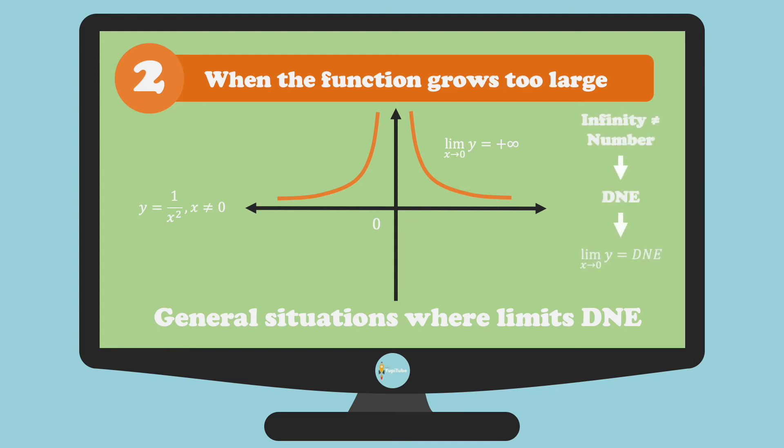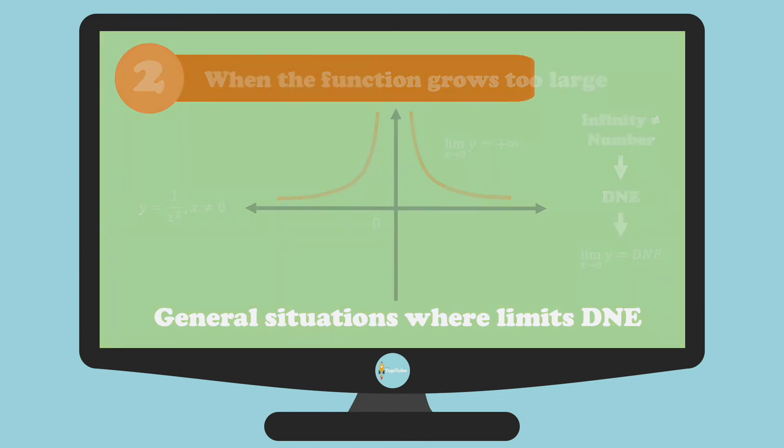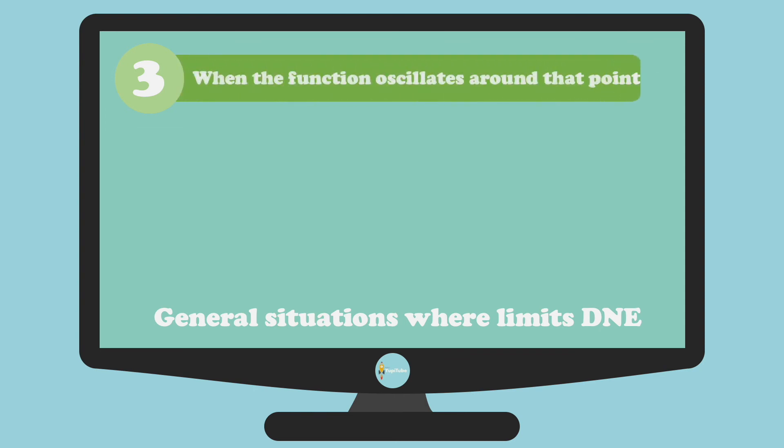We just write infinity because it is a good way of visualizing the behavior of the function. The third case is where the limit doesn't exist at the point because the function oscillates around that point.